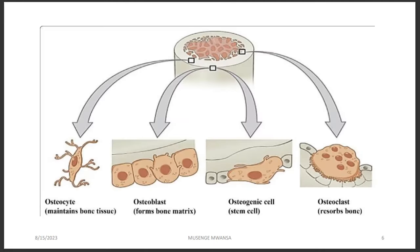Since bone is a connective tissue, it has cells and an extracellular matrix. The cells are osteocytes, osteoblasts, osteogenic stem cells, and osteoclasts. Osteocytes are the cells that maintain bone. Osteogenic stem cells form osteoblasts — think of B for build — these form bone matrix. To maintain formed bone, you need osteocytes. To break bone, you need osteoclasts — think of C for cut. Osteoclasts are there for bone resorption.